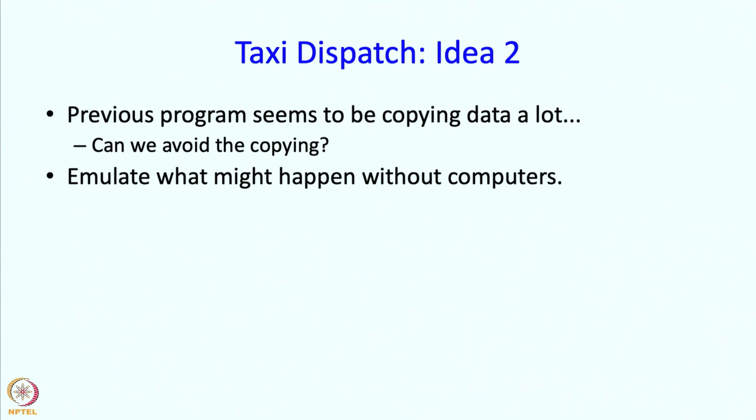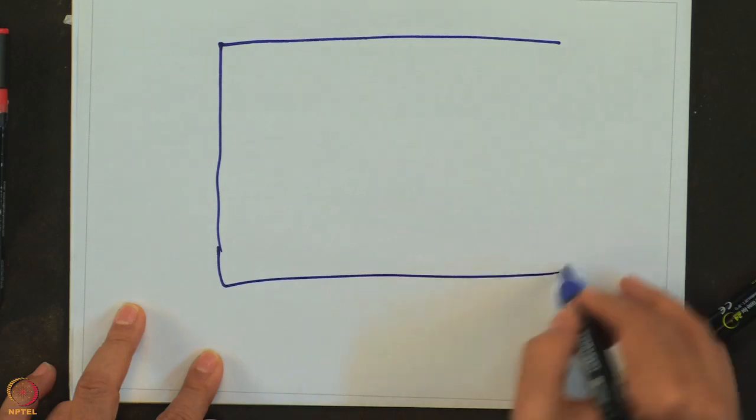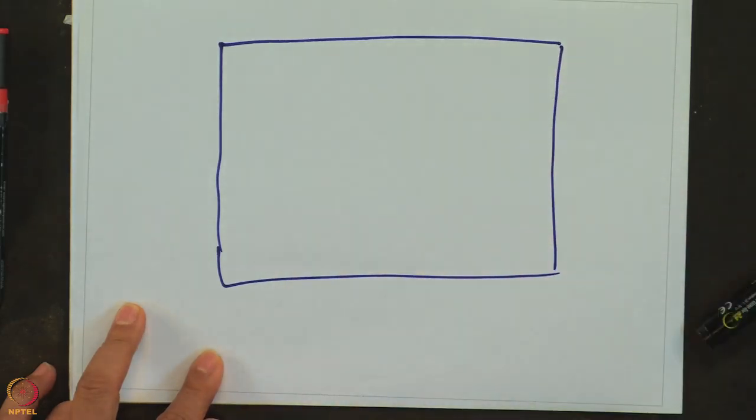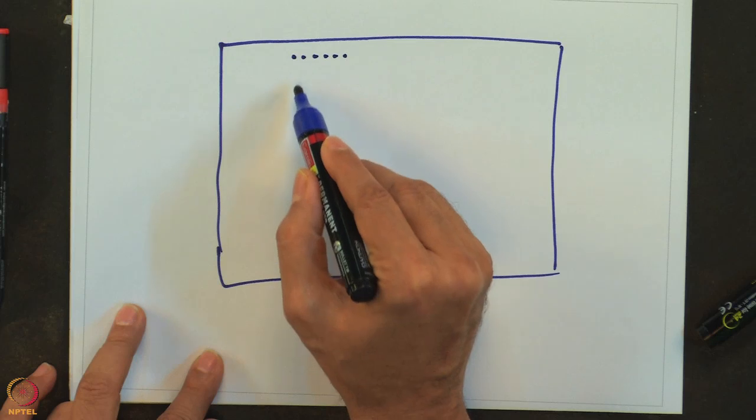Therefore figuring out what would I do manually, that is something that you should ask. So what would you do manually? Maybe you might write the names on a blackboard. So this is my blackboard. And then I start writing the names of the arriving drivers from the top.